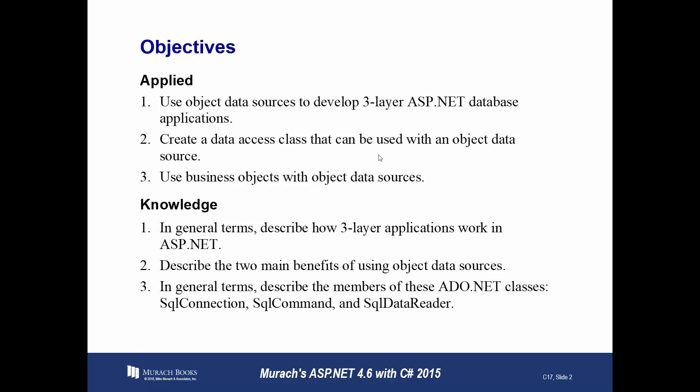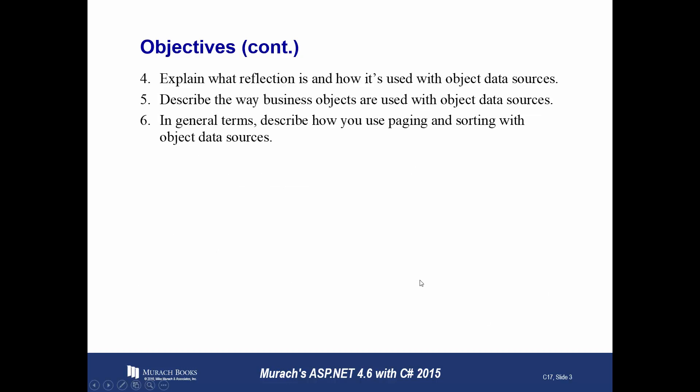Use business objects with object data sources. Our knowledge objectives: in general terms, describe how three-layer applications work in ASP.NET. Describe the two main benefits of using object data sources. Describe what an SQL connection, SQL command, and SQL data reader each is and what they do. Explain the concept of reflection and how it's used with object data sources. Describe the way business objects are used with object data sources. And describe how to use paging and sorting with object data sources.